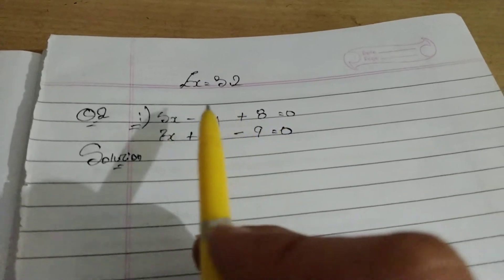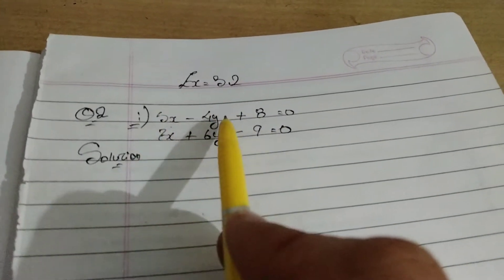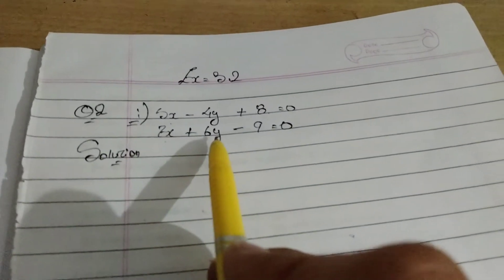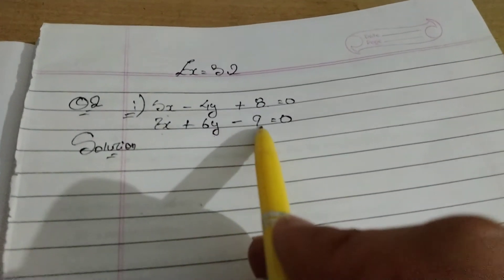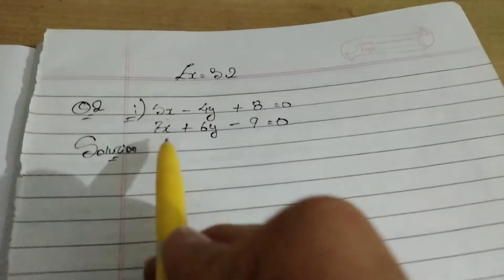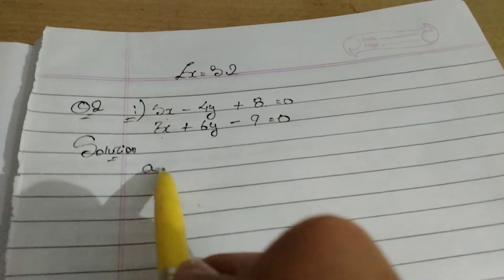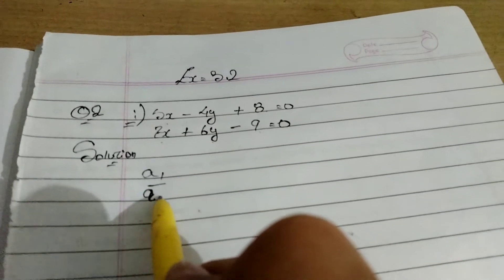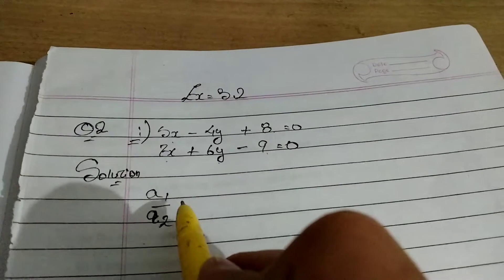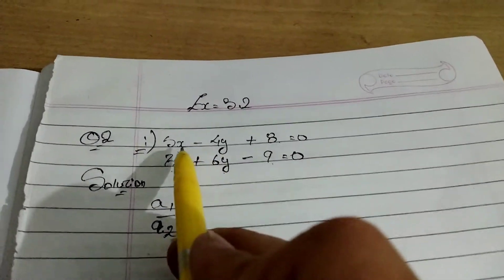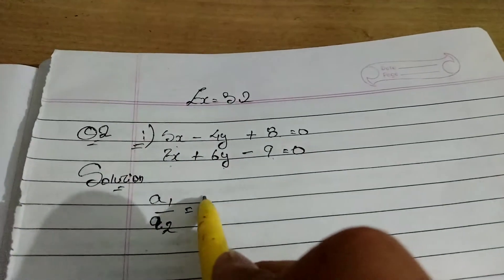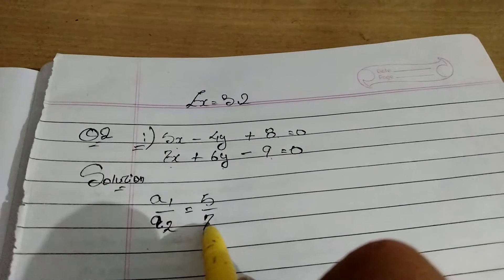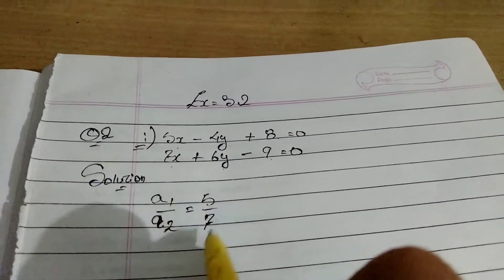I have written down the question. So this will become A1, B1, C1. Similarly, this become A2, B2, C2. Okay, start with A1 by A2. So our A1 is 5. A2 is 7. Can we cut? No.